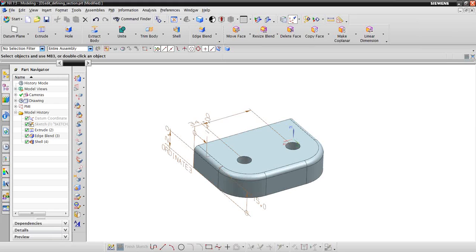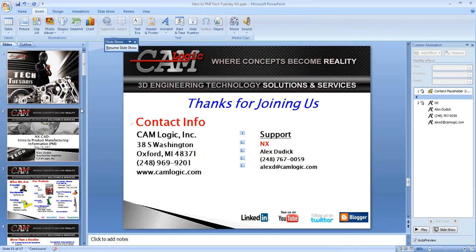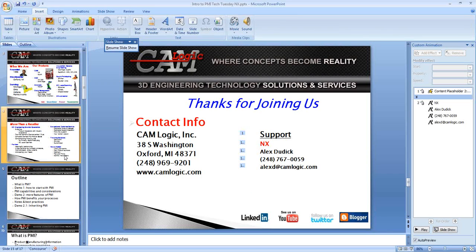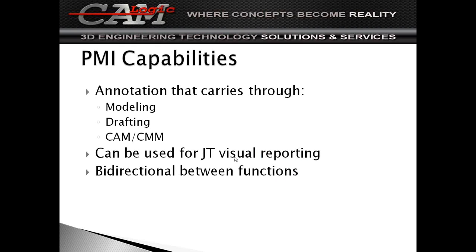So that concludes the first section. Back to the slideshow. Going into PMI capabilities — essentially it's annotation that carries through the modeling to drafting in CAM/CMM. So you use it once, you dimension once, and then you have it carrying through for the rest of the time that you're using that model or assembly. So you don't have to recreate dimensions. You don't have to worry about what it was in the past — it'll pop up. You can drag it over from modeling to drafting. You can pull it from drafting to modeling too.